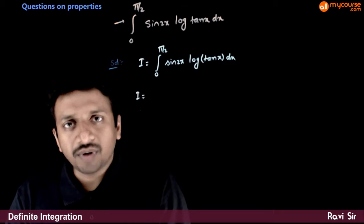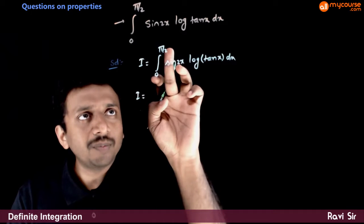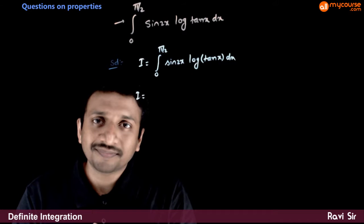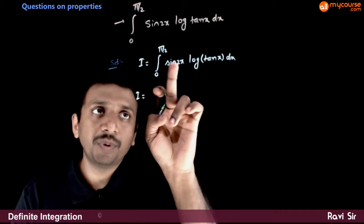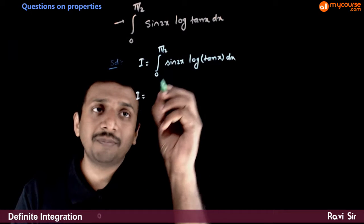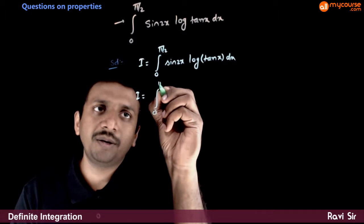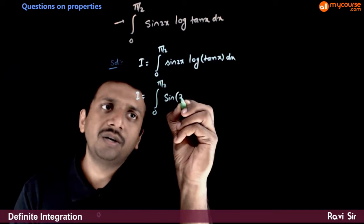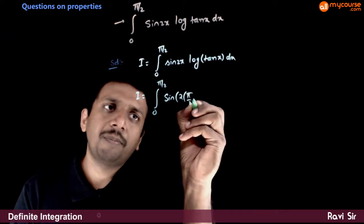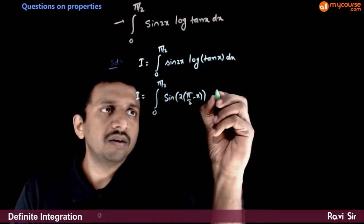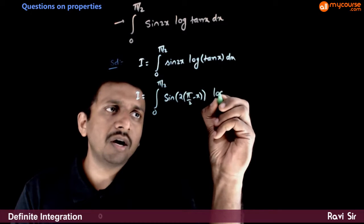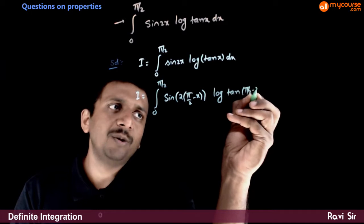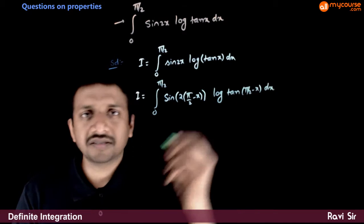We also know that I is also equal to the expression obtained by putting π/2 minus x in place of x. So if we substitute π/2 minus x in place of x, this becomes the integral from 0 to π/2 of sin(2(π/2 - x)) · log(tan(π/2 - x)) dx.